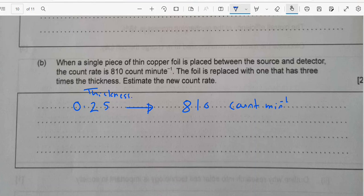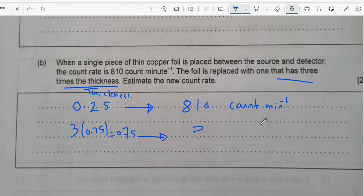Estimate: The foil now is placed with one that has three times the thickness. Three times the thickness, that means 3 times 0.25 to give me 0.75. I need how much count rate, estimate the new count rate. This question, we can solve it from the graph.